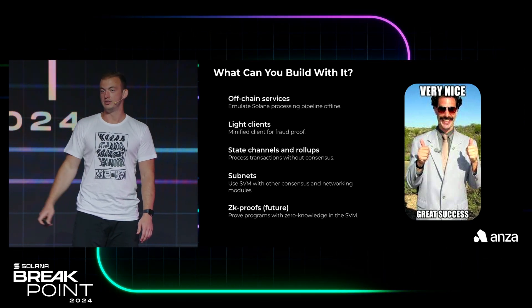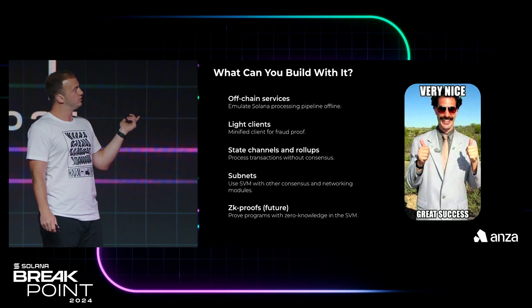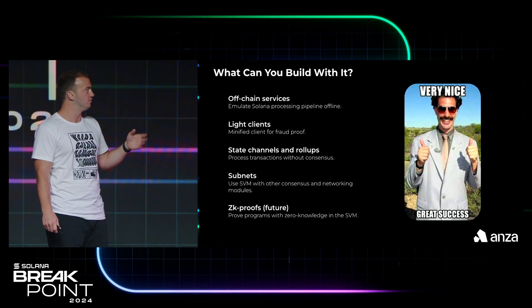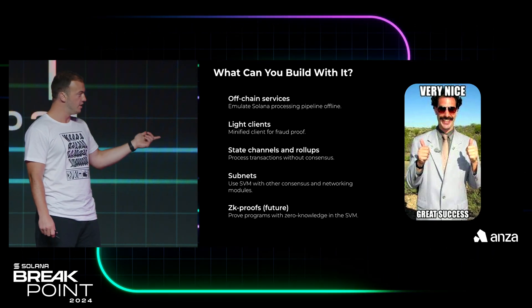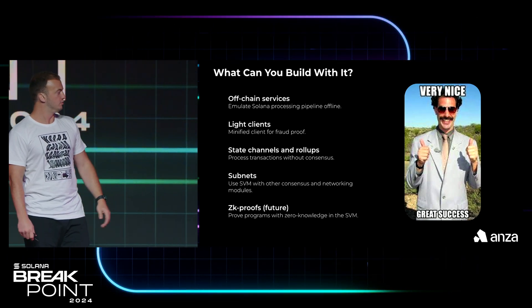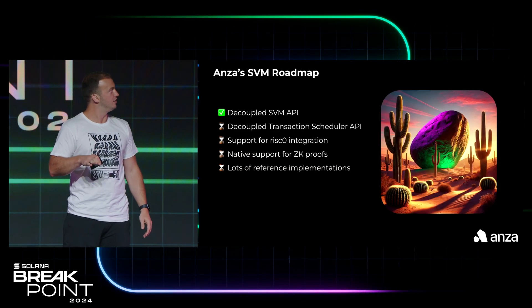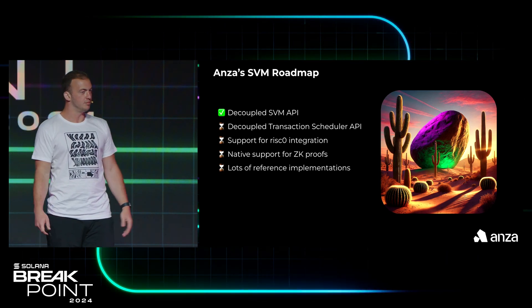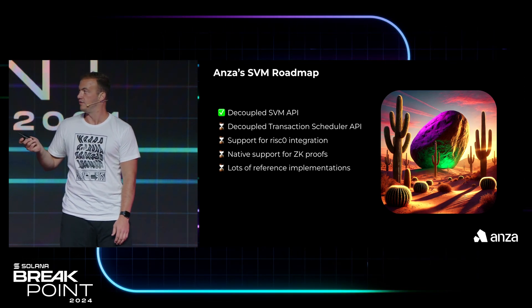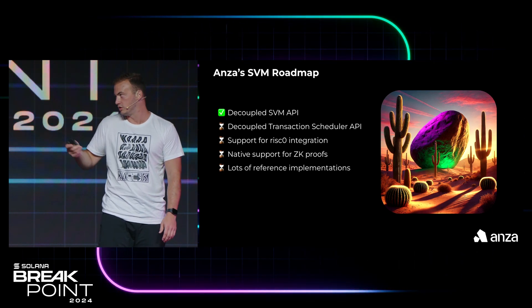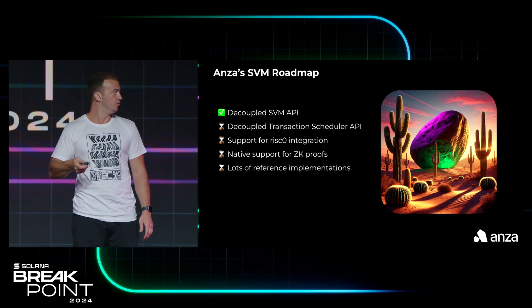So what can you build with this? There are real live projects already here. Some general examples include off-chain services where you can emulate transaction processing outside of the actual protocol, clients, state channels and rollups, subnets like Avalanche, and hopefully in the future ZK proofs — some projects are already doing this. As for the Anza SVM roadmap: we've decoupled the SVM API, which has been great. Soon we'll want to do the same for the scheduler, and we want native support for RISC0 and ZK proofs. We also want lots of reference implementations — one of which we're going to show today, and there are a few more you can check out as well.